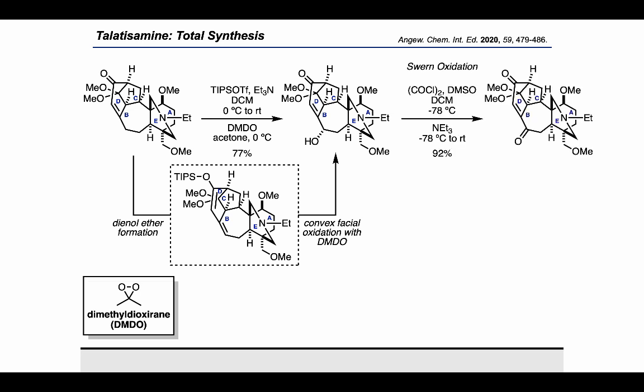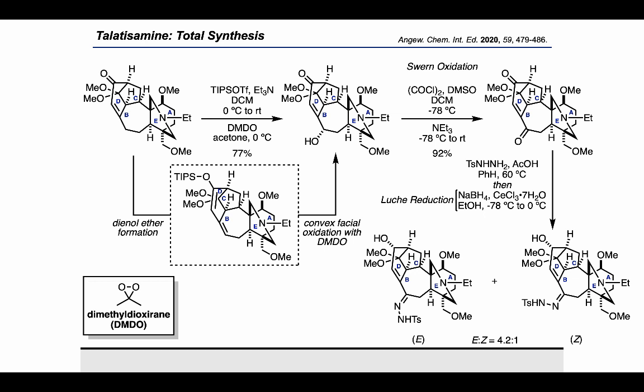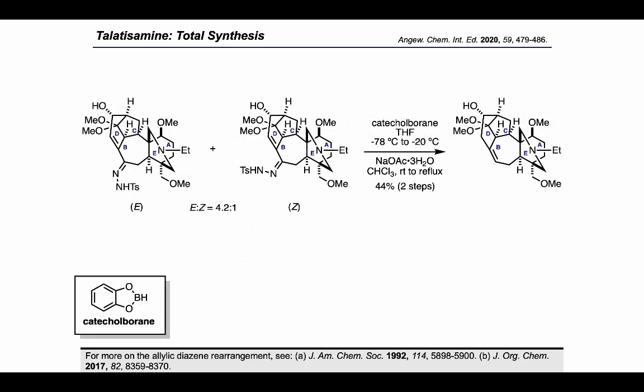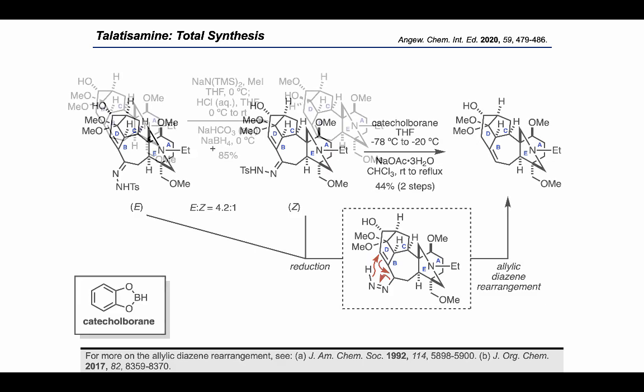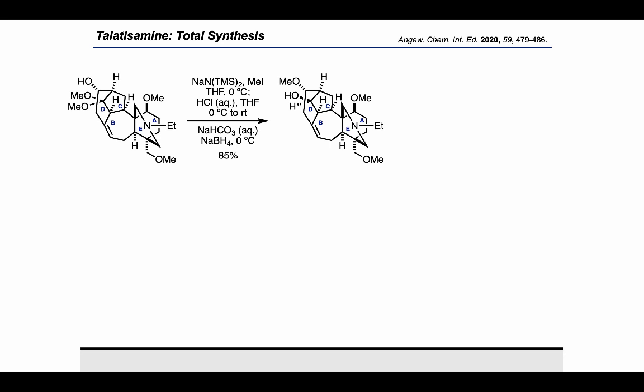A Swern oxidation led to the ketone, which could be treated with tosylhydrazine and subjected to a Luche reduction to form an easy mixture of hydrazones from the ketone in the southwest, while the ketone in the northwest was reduced to the secondary alcohol diastereoselectively. In the Luche reduction, the dimethyl ketal is proposed to sterically block the bottom face of the carbonyl. Carrying on this mixture of hydrazones, catechol borane was used to reduce the hydrazones and enable an allylic diazene rearrangement, resulting in migration of the alkene to the desired position. The northwest secondary alcohol was methylated using sodium HMDS and iodomethane, the dimethyl ketal was deprotected to the ketone with acid, and after neutralization with sodium bicarbonate, diastereoselective reduction with sodium borohydride resulted in the product shown.